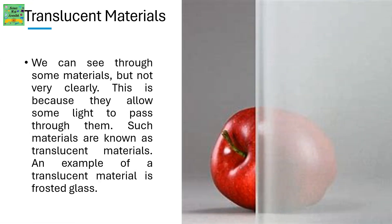Translucent materials: we can see through some materials, but not very clearly. This is because they allow only some light to pass through them. Such materials are known as translucent materials. An example of a translucent material is frosted glass.